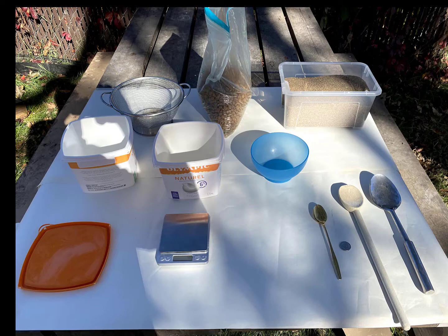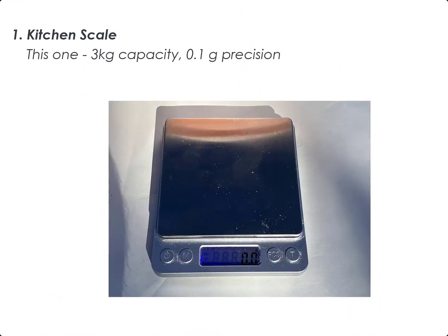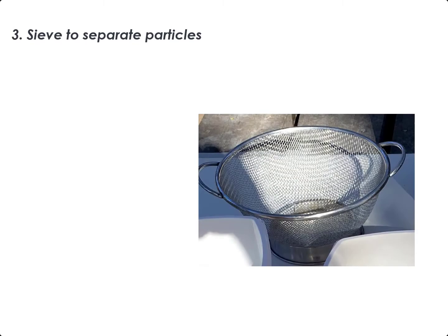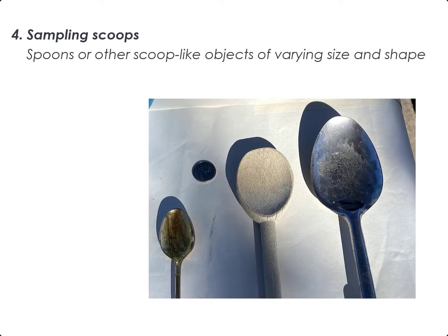Our equipment includes a kitchen scale — this one has a capacity of 3kg and reads to 0.1g precision, and it costs about $20. We also have three containers, one of which has a tight-fitting lid. We need a sieve or colander with a mesh size that will easily separate our two types of particle. We have scoops of different sizes and shapes. There is a quarter here on the table for scale.